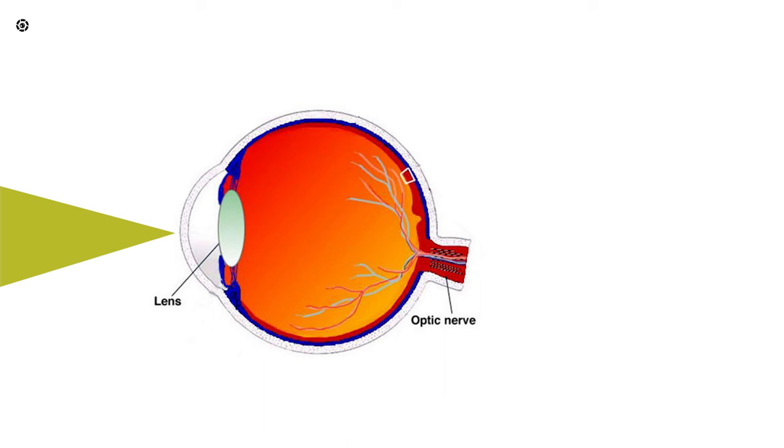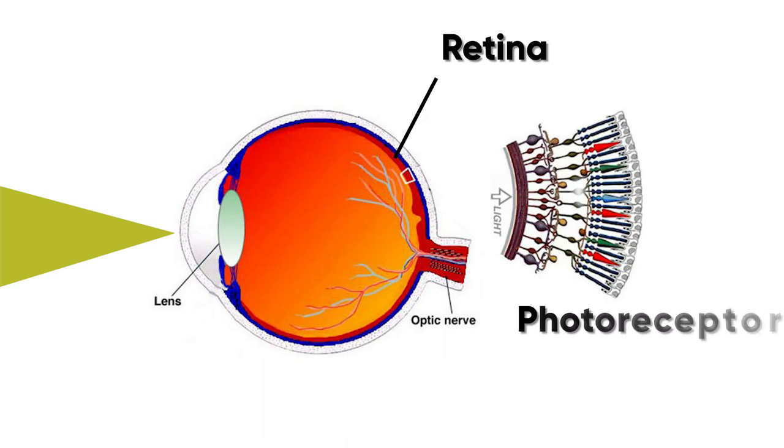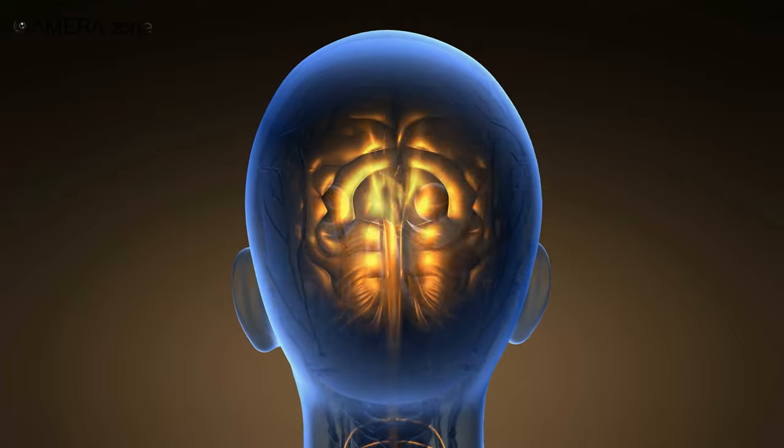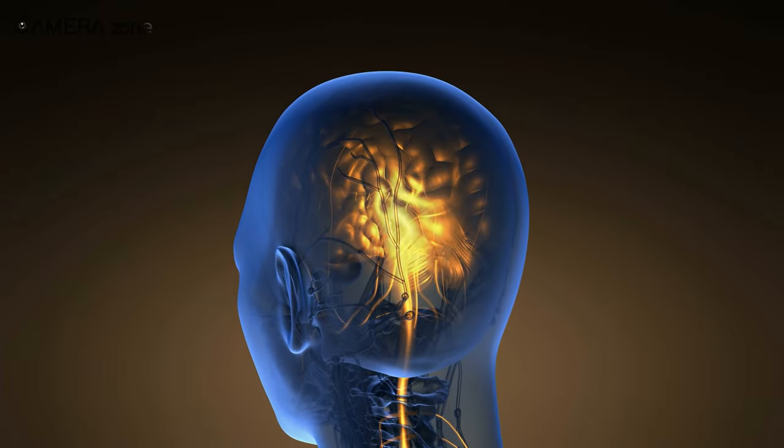When light enters into our eye from different objects, it falls on the retina. The retina is connected to photoreceptors that convert the light into an electrical signal and then transfer it into our brain. Our brain then decodes the signal and creates the sensation of an actual image.